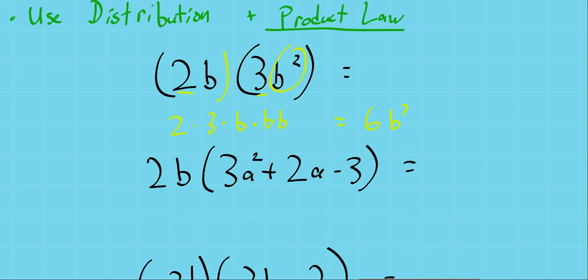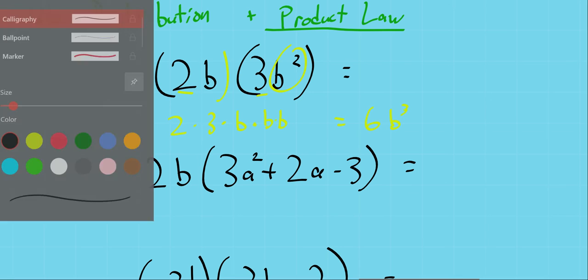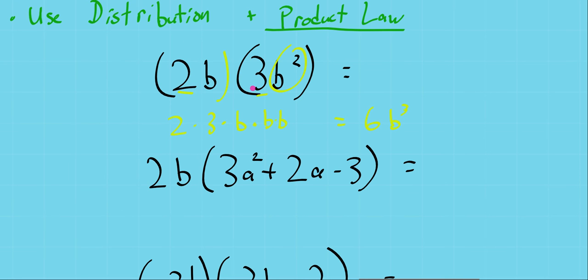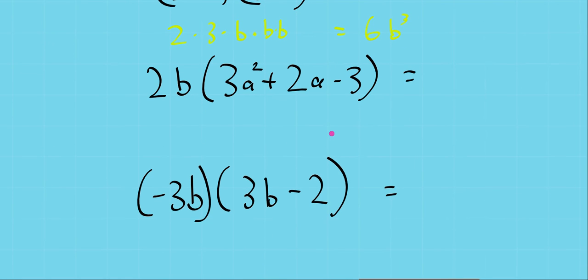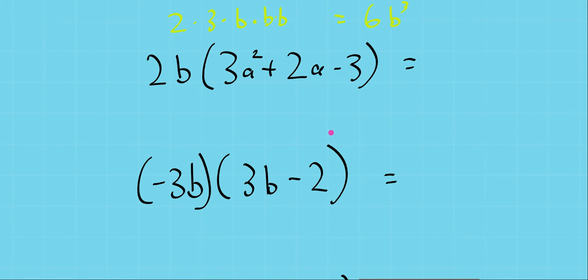Or we could write this out without doing the expansion step, just writing it out. 2 times 3 is 6, b times b squared is b cubed. You don't have to write out the expansion part, but if you are struggling with it, it's a good thing to do.